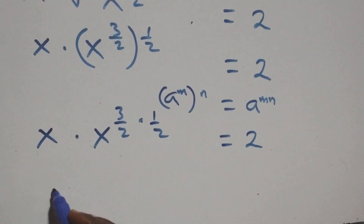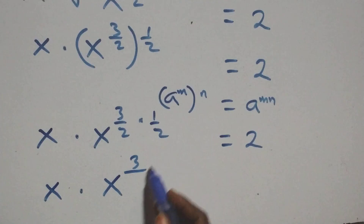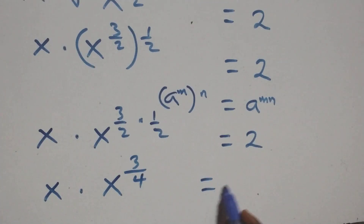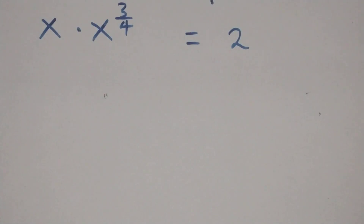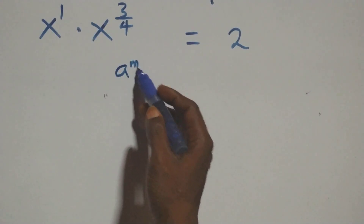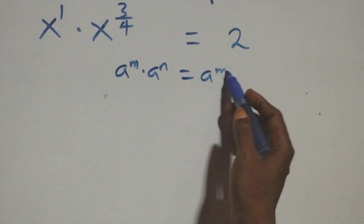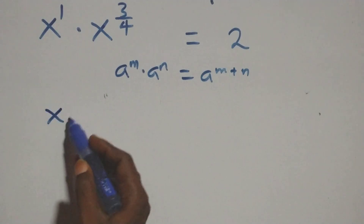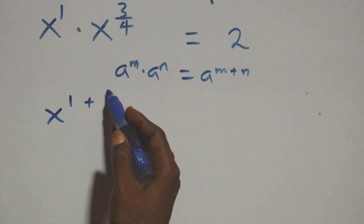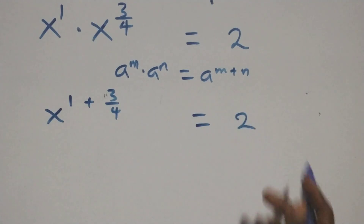Which is the same thing as x times x raised to power 3 over 4 equals to 2. Also, x raised to power 1, and when we apply the law of indices — a raised to power m times a raised to power n equals a raised to power m plus n — we have x raised to power 1 plus 3 over 4 equals to 2.